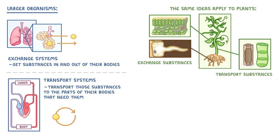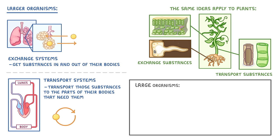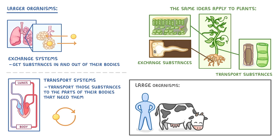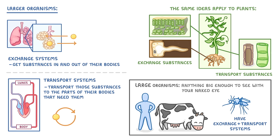We'll take a closer look at each of these specialized exchange surfaces and transport systems in other videos, but the aim of this video was just to explain why we need them. Also, it's important to understand that when we say large organisms, we don't just mean things like humans and cows. We're really referring to anything that's big enough to see with your naked eye. For example, even insects like mosquitoes have exchange and transport systems.